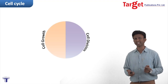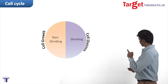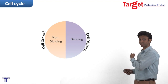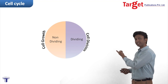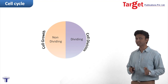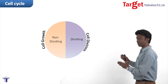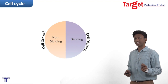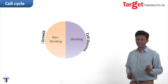If we look at the cell cycle, the part where the cell is dividing is the dividing stage, and the part where the cell is growing is the non-dividing stage. So there are two parts to the cell cycle: a dividing stage and a non-dividing stage. The non-dividing stage has a separate name — we call it the interphase.